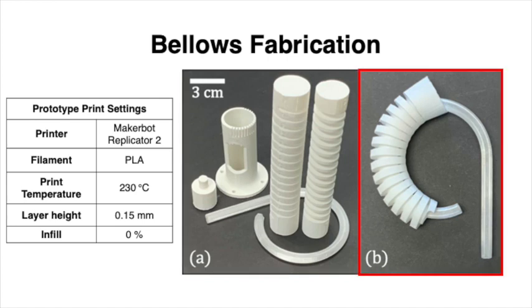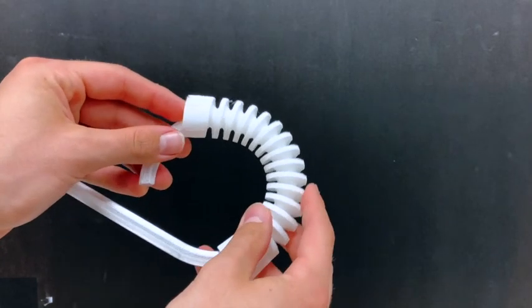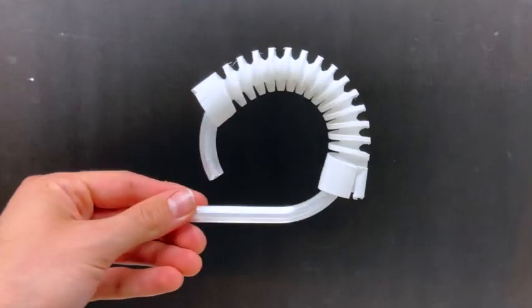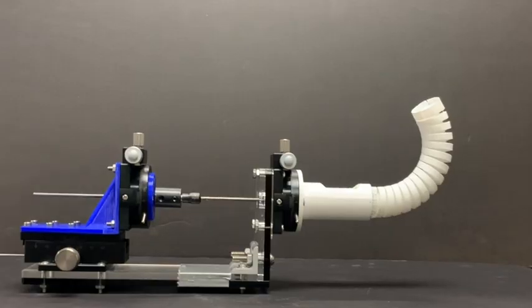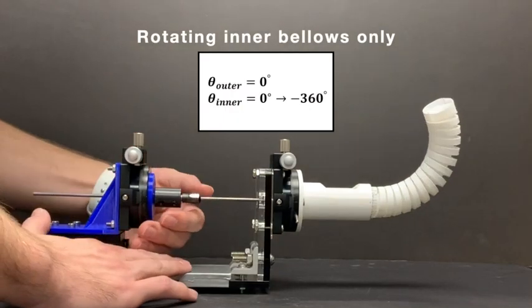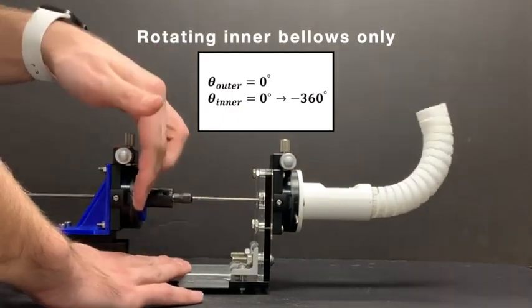We inserted a curvature jig through the bellows inner lumen to enforce a desired pre-curvature on the bellows. Bellows are then heated to set pre-curvature. We will now demonstrate the possible range of motion for a pair of pre-curved bellows.